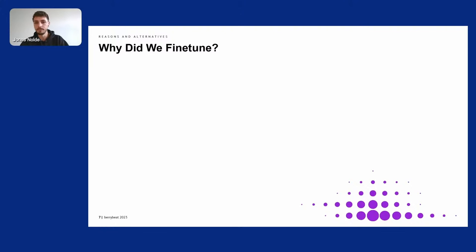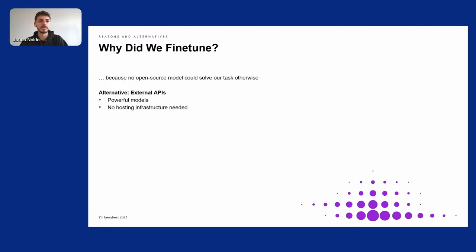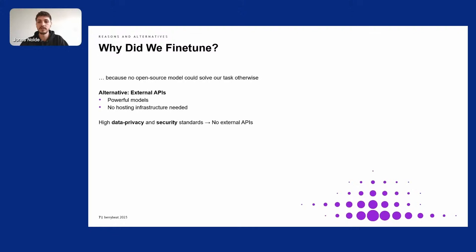Why did we fine-tune? Fine-tuning a model takes a lot of work. We did it because no open-source model could solve our task otherwise. We could have used an external API like OpenAI's models — they are very powerful and could do text-to-Cypher translation out of the box and we wouldn't need infrastructure for hosting. But our customers' natural language inputs could contain sensitive information, and for data privacy and security reasons we couldn't use external APIs. We had to host an open-source model ourselves to keep everything private.